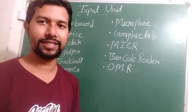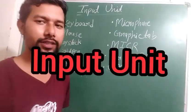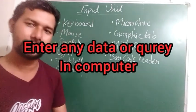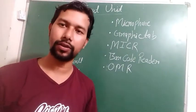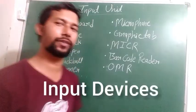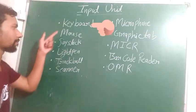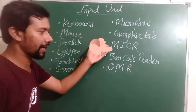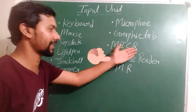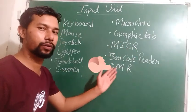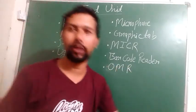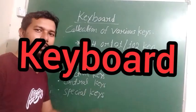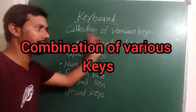The first term of computer system is the Input Unit. Input means any data or query inserted into your computer system. The device that helps with input is called an input device. We have various input devices: keyboard, mouse, joystick, light pen, trackball, scanner, microphone, graphic tablet, MICR, bar code reader, and OMR. We will discuss all these devices in this session.